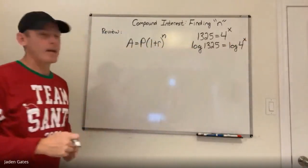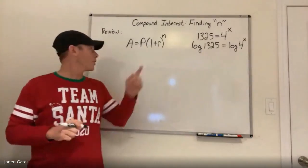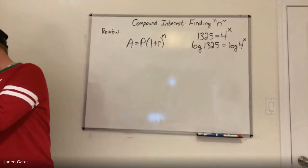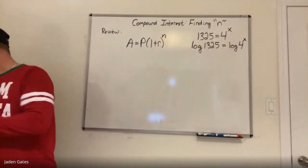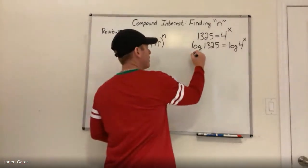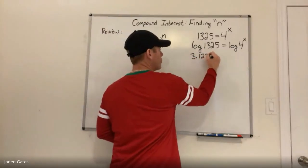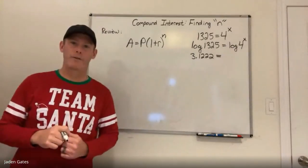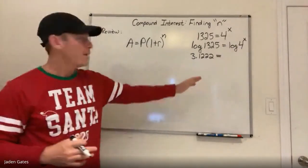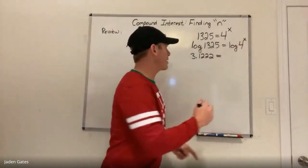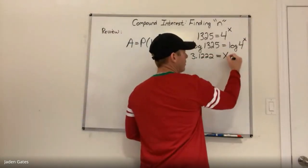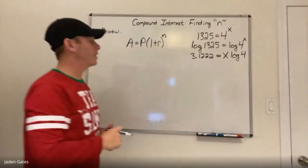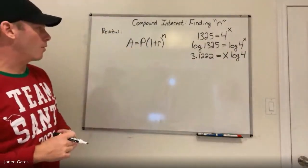We're taking the log of both sides because we're solving for an exponent. The log of 1325 — I put that in my calculator and I get 3.1222. The reason we use logs is there's a log rule that allows me to bring the x down to be a normal number. So I can rewrite log of 4^x as x times log 4.